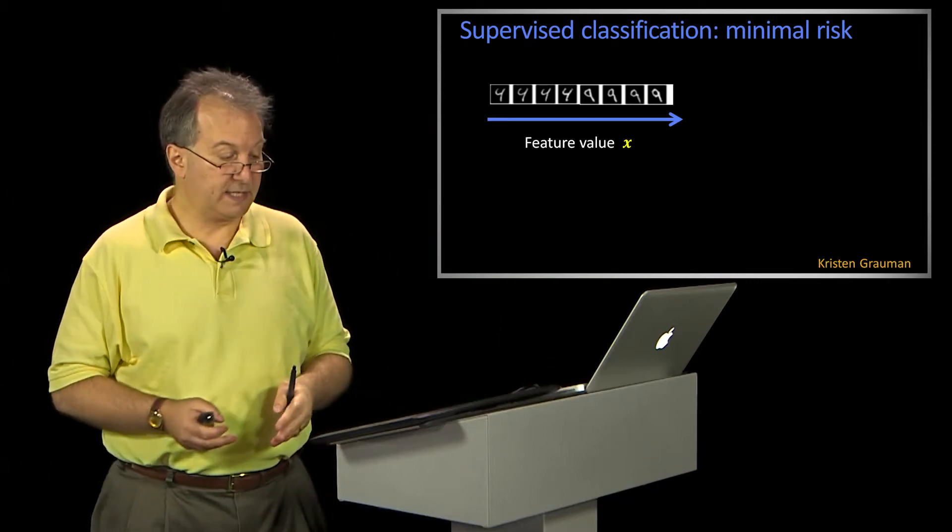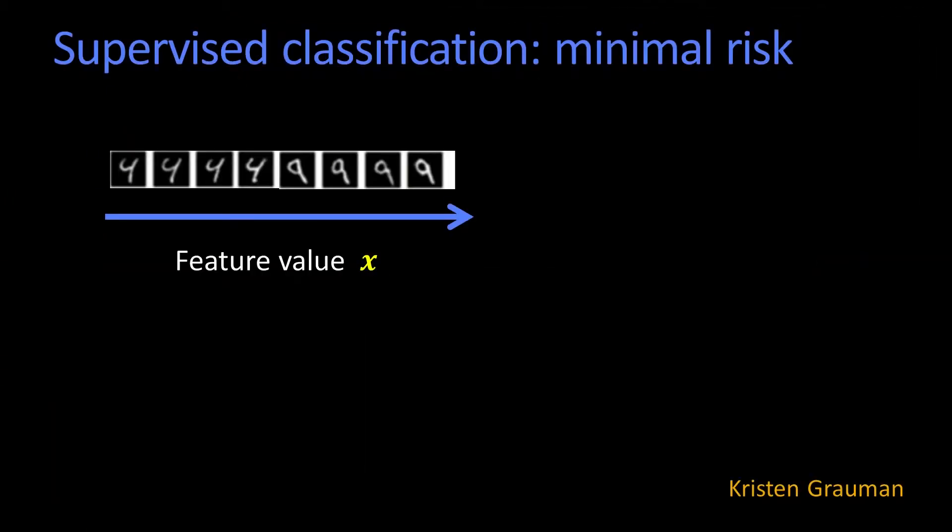So here we're going to work through this simple example again using our fours and nines. We're going to assume that we have some feature that we're measuring, x. It's typically a vector, but I'm going to show it here as a scalar. So x goes from small x, little x, to big x.